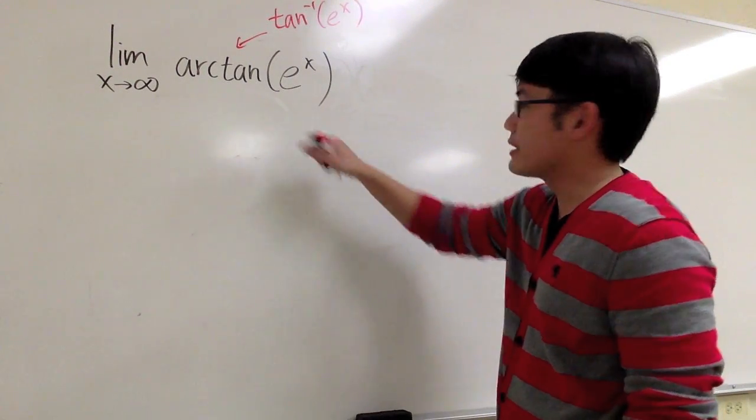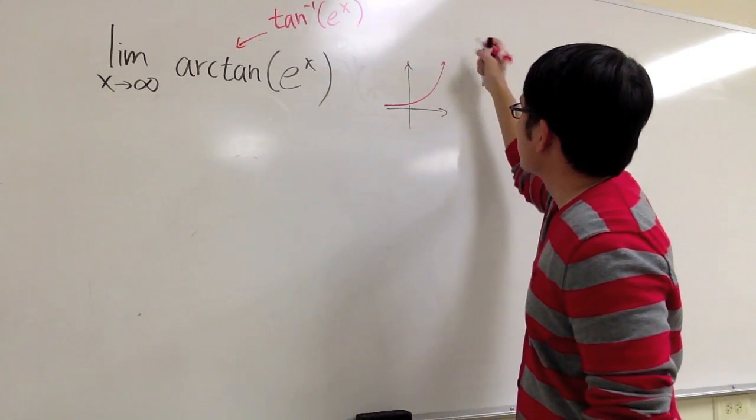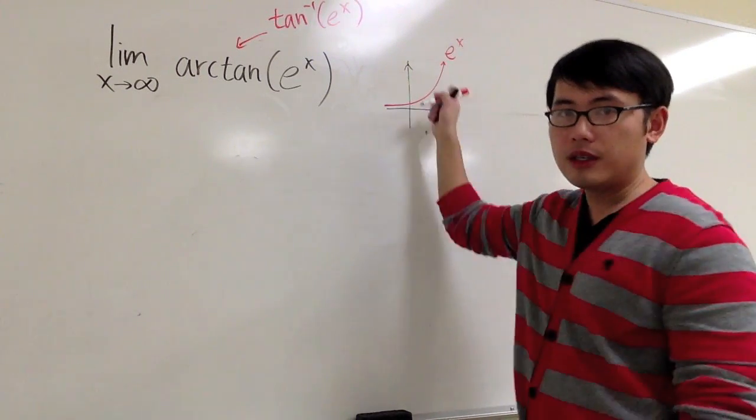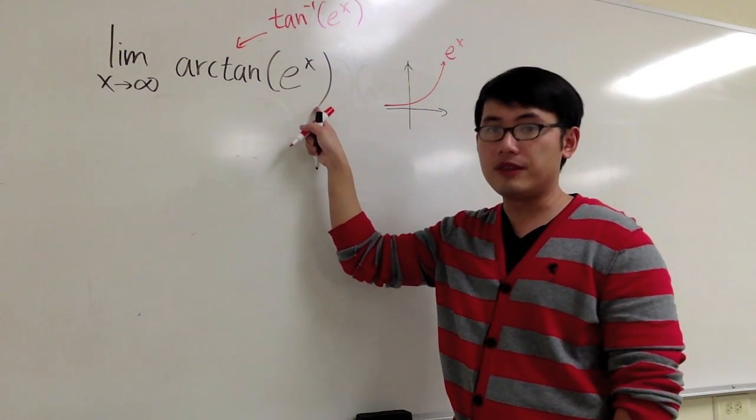By looking at a graph of e to the x, here, this is a quick graph. e to the x goes like this. It shoots up. When x goes to infinity, the inside will also be infinity.